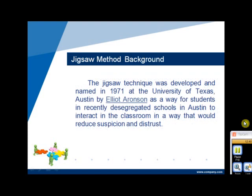The Jigsaw technique was developed and named in 1971 at the University of Texas, Austin, by Elliot Aronson, as a way for students in recently desegregated schools in Austin to interact in the classroom in a way that would reduce suspicion and distrust. Aronson has since written widely on the Jigsaw technique, focusing on the benefits of Jigsaw for reducing hateful behavior and increasing cooperation in the classroom. Since the 1970s, other educators have adopted Jigsaw for use in a wide variety of classroom, lab, and field situations at all levels from grade school to graduate education.